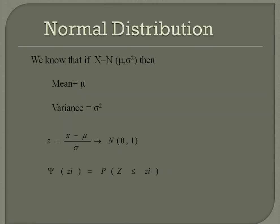We know that if x follows Normal(mu, sigma squared), then mu is the mean, sigma squared is the variance, and z equal to x minus mu divided by sigma follows Normal(0, 1). Psi(z_i) equals the probability of z less than or equal to z_i.